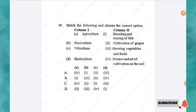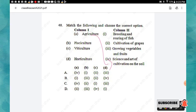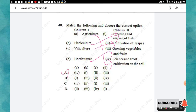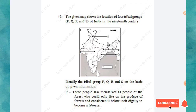Question 48: Match the following and choose the correct option. Agriculture — science and art of cultivation of the soil. Pisciculture — breeding and rearing of fish. Viticulture — cultivation of grapes. Horticulture — growing vegetables and fruits. The right answer is option A.